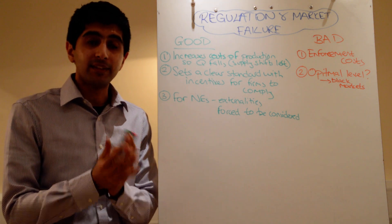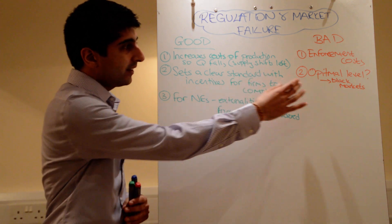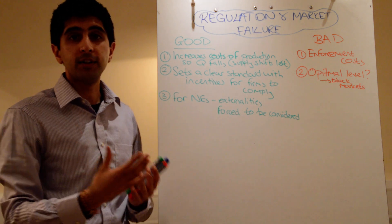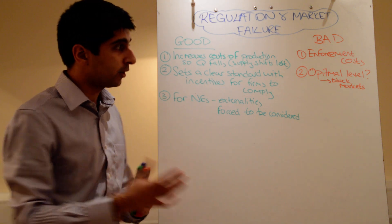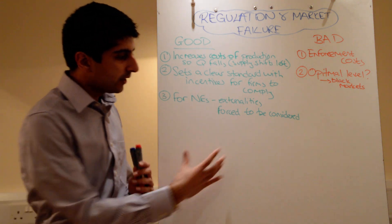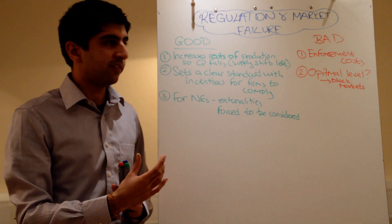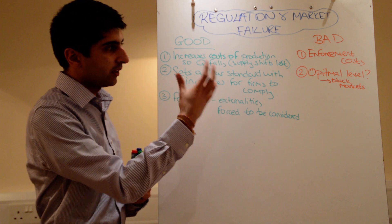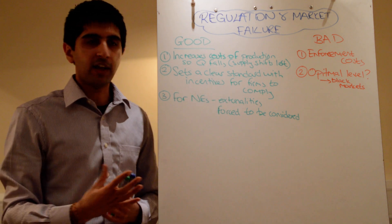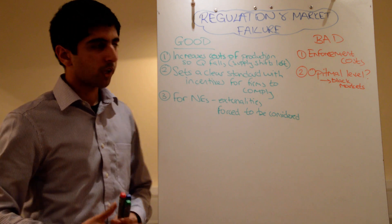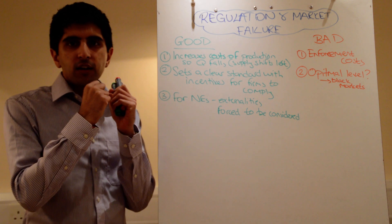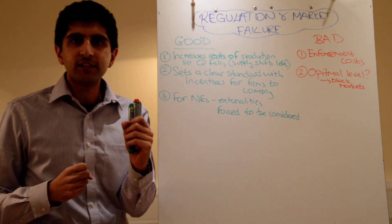If the level of information the government has is limited, getting to the optimum level of regulation is difficult and may not be done correctly, leading to more government failure. You also need to consider costs versus benefits — if costs are higher than the benefits, the situation could be made worse.